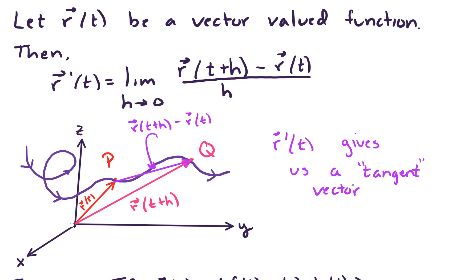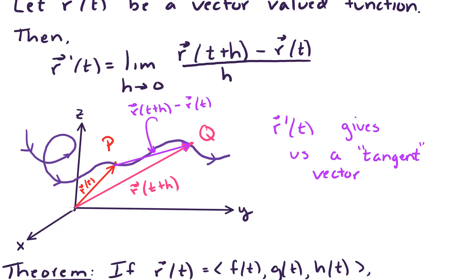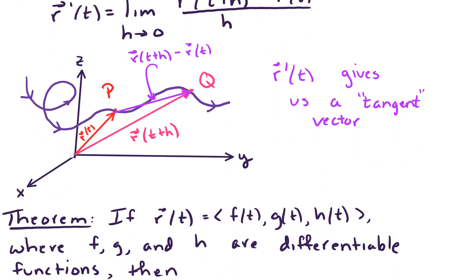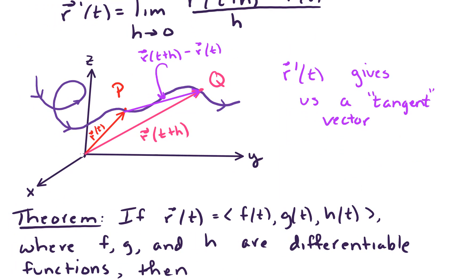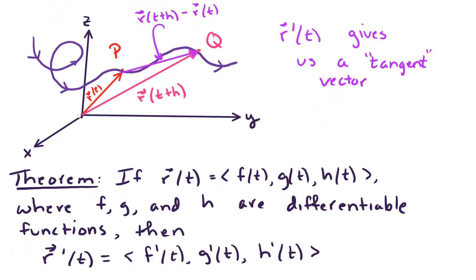Now, just like in calc 1, we didn't use the limit definition very much. We often get right into computing derivatives with our power rule and chain rule and all of that. So let's get right to it here for calc 3. We've got a theorem. We will use this theorem extensively. So if r of t has components f of t, g of t, and h of t where f, g, and h are differentiable functions, then the derivative is just the vector function f prime of t, g prime of t, and h prime of t.